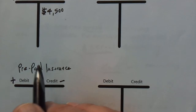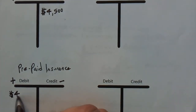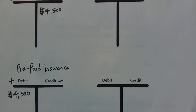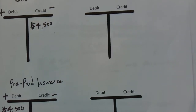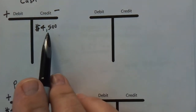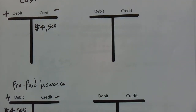So I'm going to debit this for $4,500. We have now fully accounted for that first transaction on January 1st. We have credited our cash and we have debited our prepaid insurance.